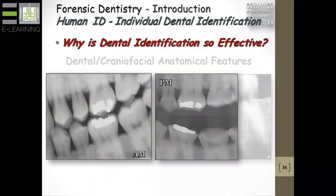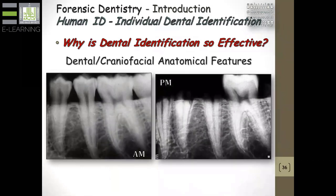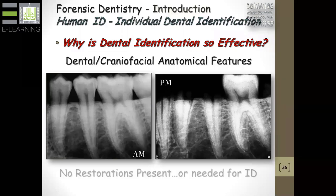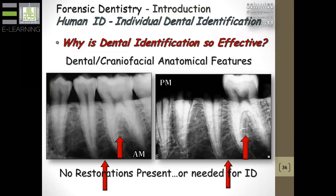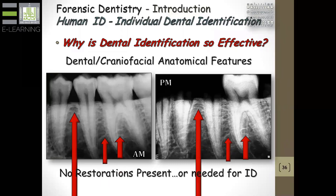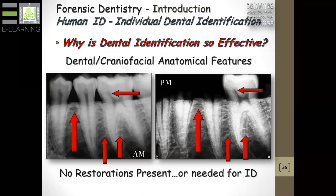Here are ante-mortem and post-mortem radiographs. Here's another situation where you don't even have any restorations, and in the post-mortem situation the teeth have been fractured off based on whatever trauma caused the death. No restorations, but we really don't need any. Look at this trabecular pattern — those three points here: one, two, three match one, two, three. If you look at the mesial pulp horn, those are identical. These radiographs could physically be superimposed, either with a computer or by hand, to show they are exactly the same and have to come from the same individual.